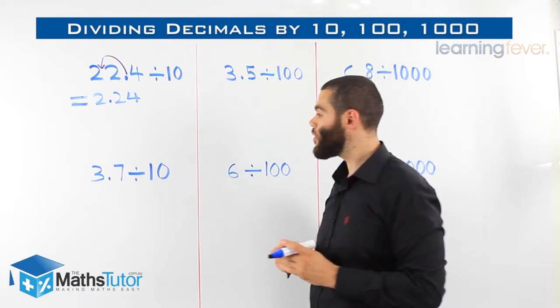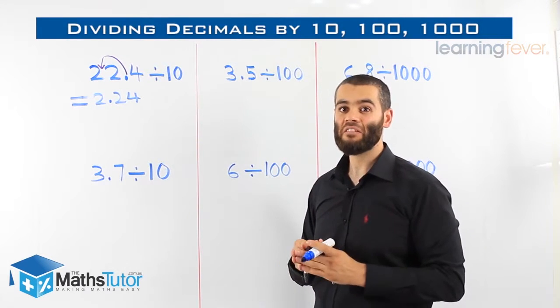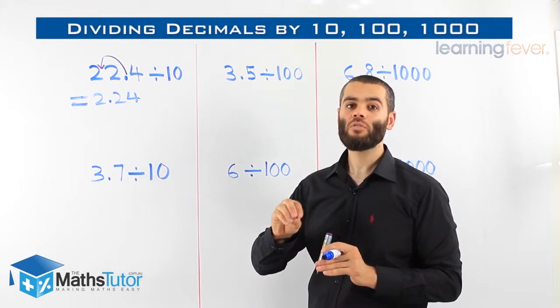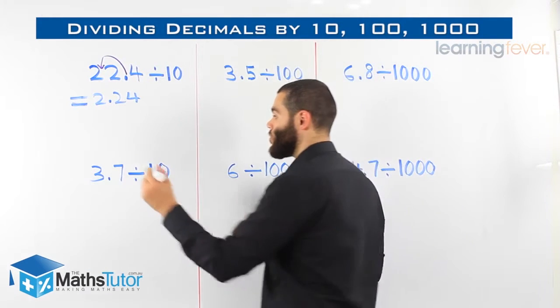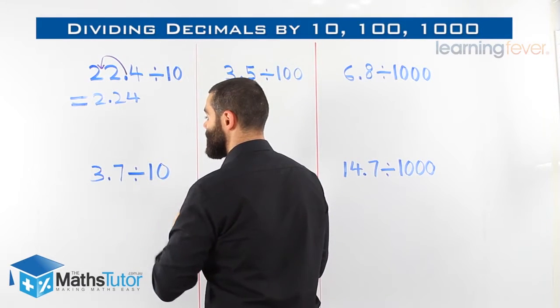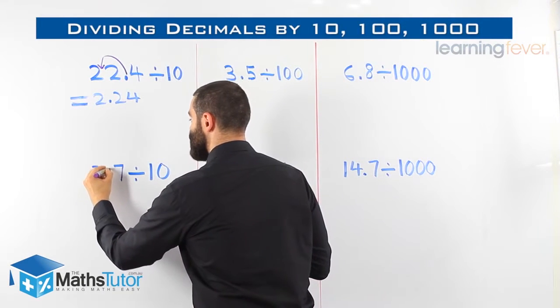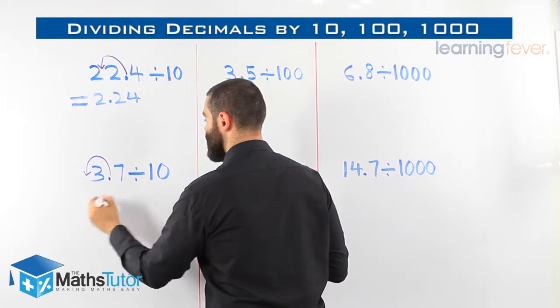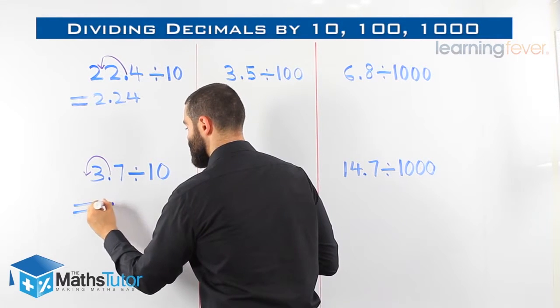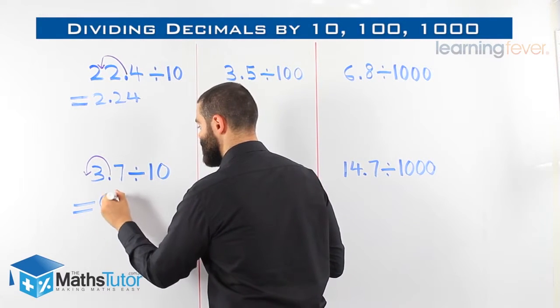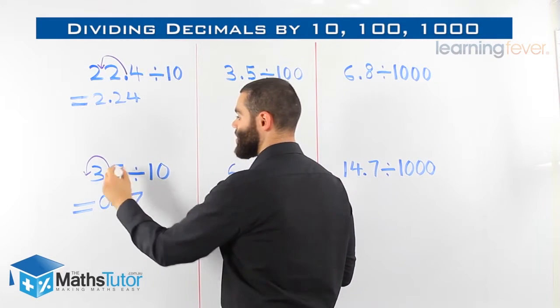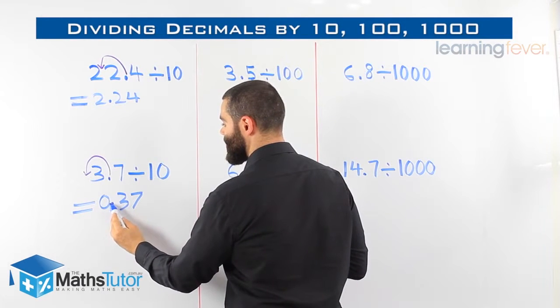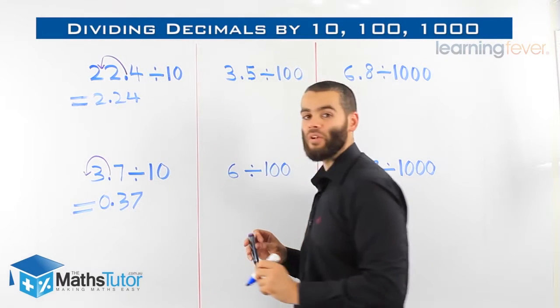Next, 3.7 divided by ten. Once again, ten has one zero. We are dividing, so we are grabbing the point and we're saying, you're going to move to the left. Moving to the left, so grabbing it and moving it to the left once. 3.7 divided by ten, zero point three seven. So we moved it before the three, it was there and we moved it and it became 0.37.